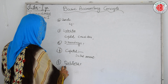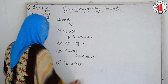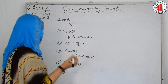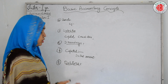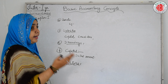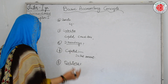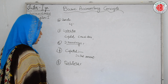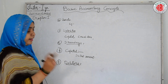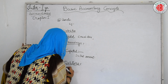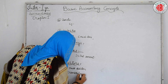Our next important topic is debtors. Debtors are people who borrow money from the business but are not in a position to repay it on time — they take some time before they can pay. These individuals come under the category of debtors. Debtors are of two types: trade debtors and general debtors.